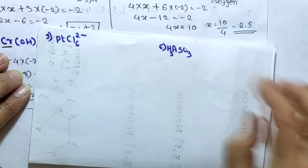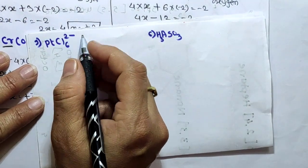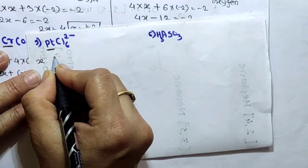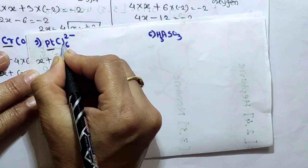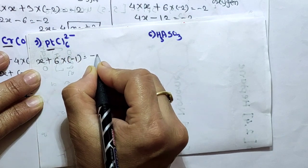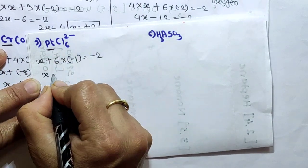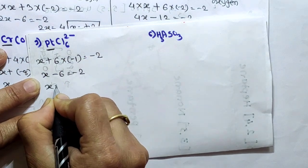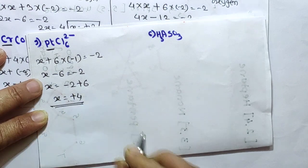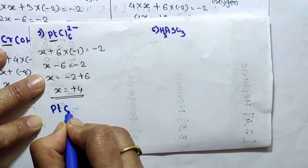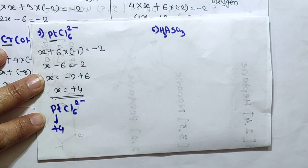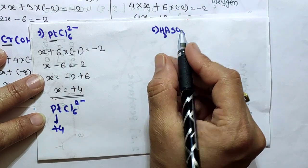Next example: PtCl6²⁻. Find the oxidation state of platinum. We write: x + 6×(-1) = -2, since chlorine (Group 17) has oxidation state -1. So x - 6 = -2, therefore x = -2 + 6 = +4. So platinum has oxidation state +4 in PtCl6²⁻.